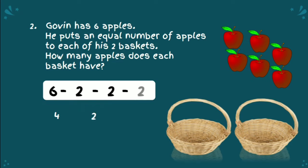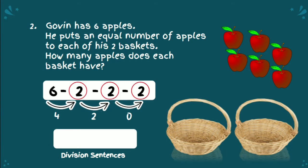2 minus 2 again is equal to 0. So now, how many times we subtract 2 from 6? Great job. 3 times. So the answer is 3. This is the division sentence: 6 divided by 2 is equal to 3 because we subtract 2 from 6 three times.